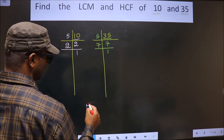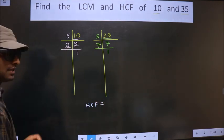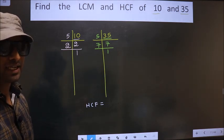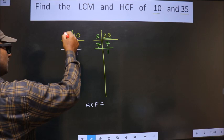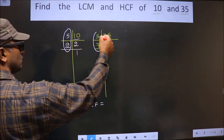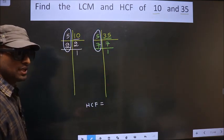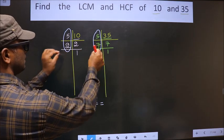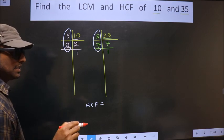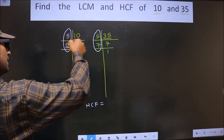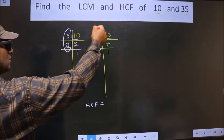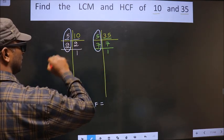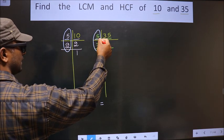So now our HCF is... HCF is the product of numbers that are present here and also here. So now we should find the numbers that are present in these two places. I repeat, we should find the numbers that are present here and also here. So let us find, starting with the number 5. Do we have 5 here? Yes.